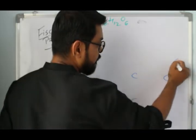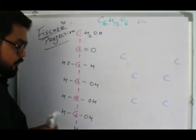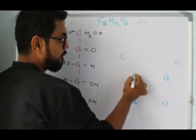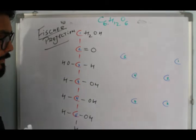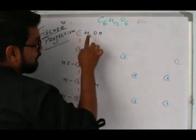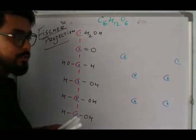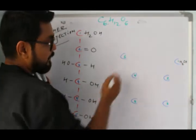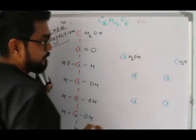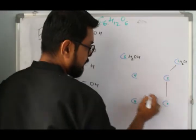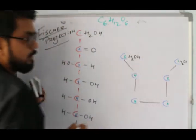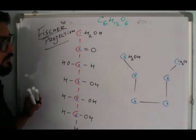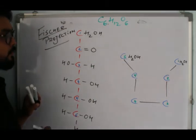I'll place the carbons in the Haworth ring: one, two, three, four, five, and six. Carbon one is CH2OH, and carbon six is also CH2OH. I'll connect them all in the ring structure. The second carbon has a double bond to oxygen — a ketone group — so I'll place the double bond O here.